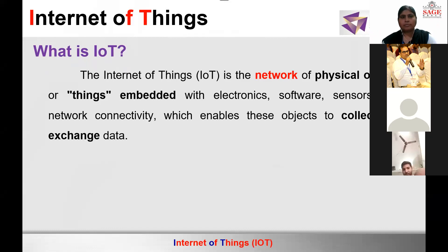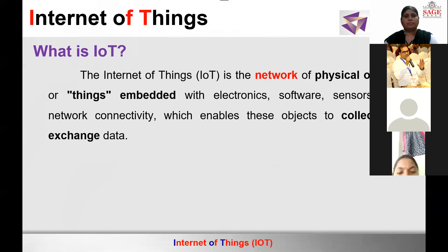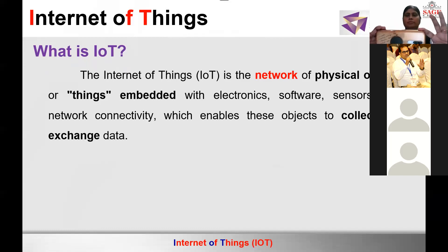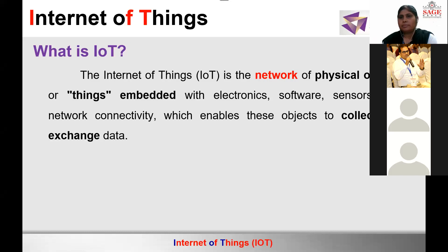These physical objects can be anything available in this world — it can be a pen, pencil, a human being, an animal, an aeroplane, a drone — any thing that will exchange data. Now for exchanging data, there should be collection of data. To collect that data, we require something called sensors.